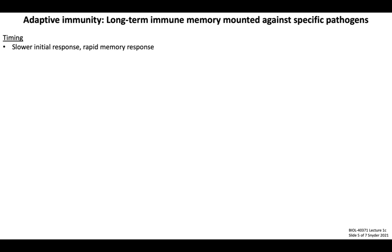Next, let's get into adaptive immunity, which I want you to associate with long-term immune memory mounted against specific pathogens. In comparison to innate immunity, adaptive immune cells exhibit a slower initial response to infection but can undergo rapid recall of memory responses to reinfection. These are all kinetic properties of adaptive immunity that we touched on in the diagram discussed at the beginning of today's lecture.